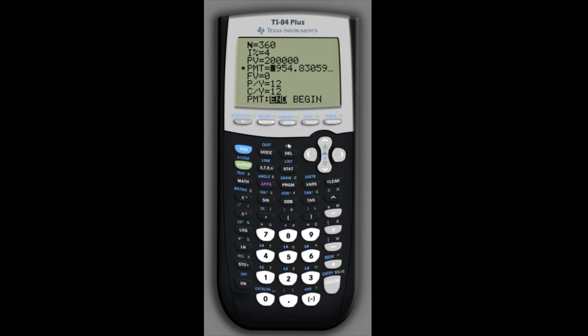If we change the interest rate to 3.5%, we can now go back to the PMT and solve again, and the monthly payment comes out to about $900. Now that we have both payment amounts, we can go back to the rest of the problem.